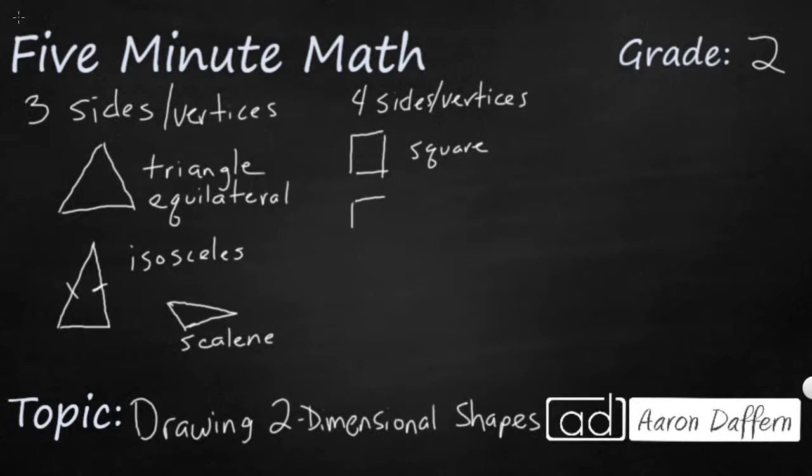But you could also draw kind of an extended square. And we know that as a rectangle. It's a rectangle because it's got four sides. And just like the square, each of the corners are what we call perpendicular or right angle. It's a square corner, straight up and straight across.